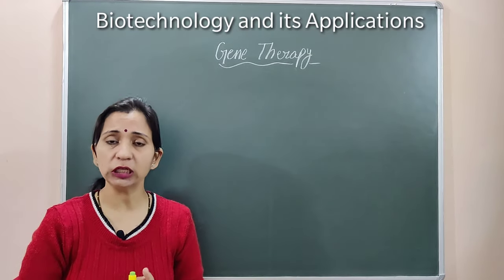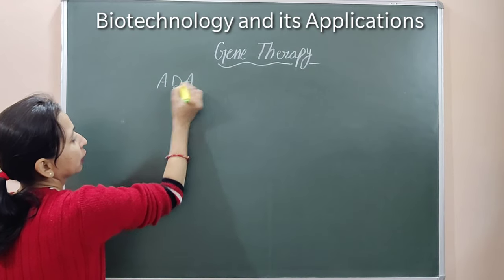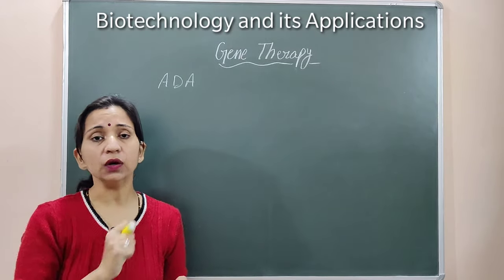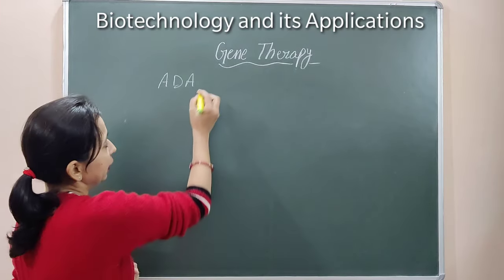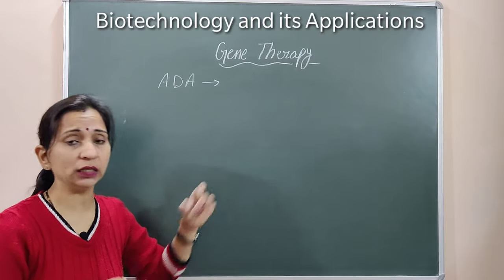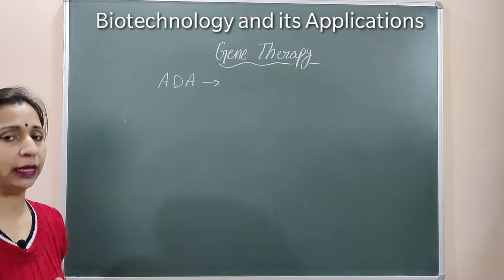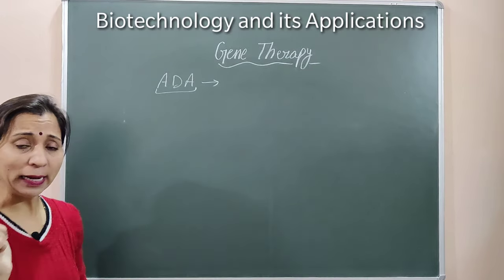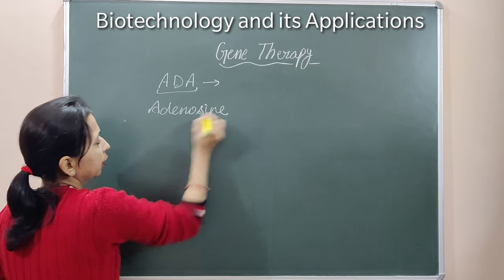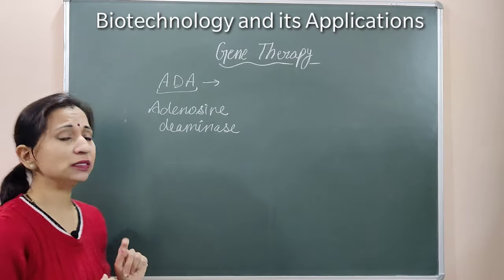The first gene therapy was related to an enzyme called ADA — that is adenosine deaminase enzyme. This first gene therapy was performed in a four-year-old girl in 1990. First, let's try to understand the role of this ADA enzyme, then we will move on to the actual process. ADA stands for adenosine deaminase — this is the full form of this enzyme.